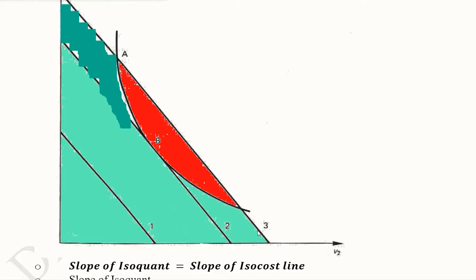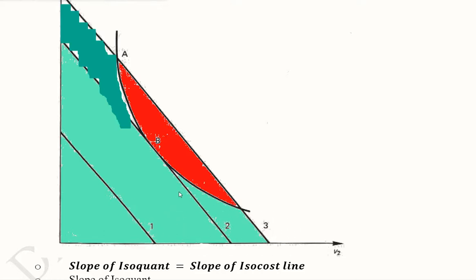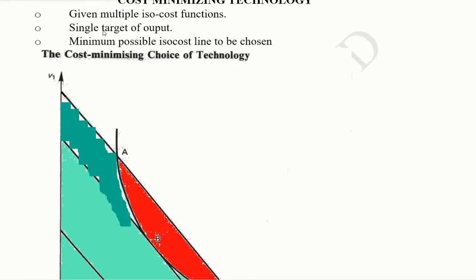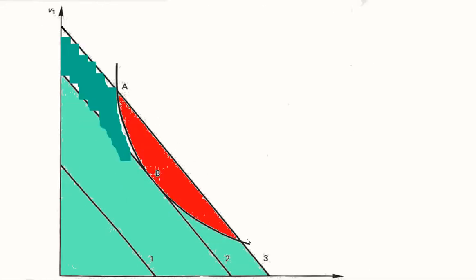This is the first one, second one, third one. These are the various isocost functions. And then we have a single target of output. This is what we want to produce. This is the isoquant that we want to achieve, a certain level of output.